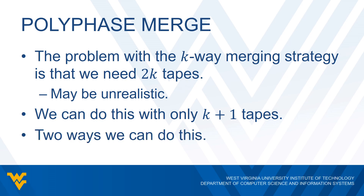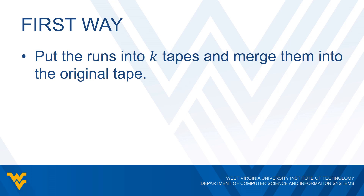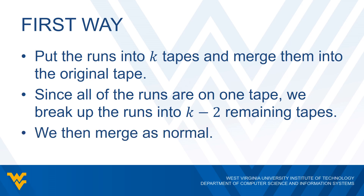We'll talk about two different ways to accomplish this. The first approach is that we put all the runs into K tapes, then merge all those into the original tape — that's how we get K plus one. Since all the runs are now on just one tape, we then break up those runs into K minus two remaining tapes. Why K minus two? Because that leaves two tapes left over, which means we can merge as normal, putting stuff onto those two tapes and then using the remaining tapes to merge further. So we just go back to our original approach, using the earlier tapes for that initial breaking up and merging.